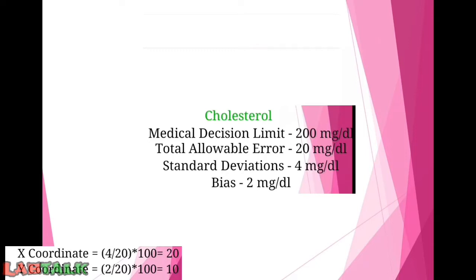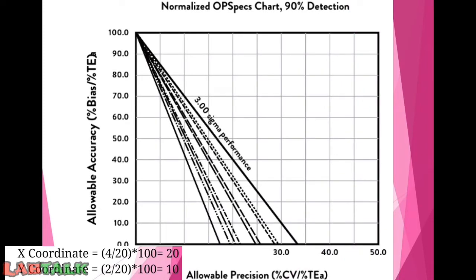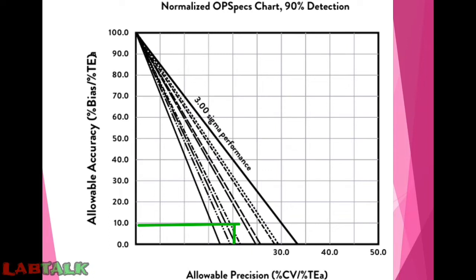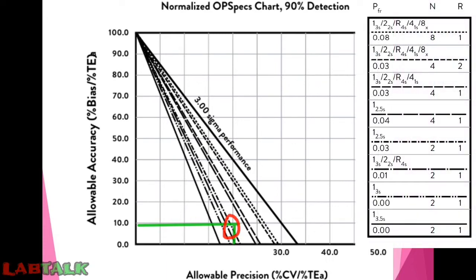We now need to plot these two points on the normalized operator specification chart. Draw a line from the x-coordinate of 20 parallel to the y-axis, and a line parallel to the x-axis from the y-coordinate. The intersecting point is the operating point for cholesterol. For this operating point we need to find the optimum frequency of QC runs as well as the rules to use for QC planning. Let us see the key for this operator specification chart, which we will use for interpretation of this operating point.